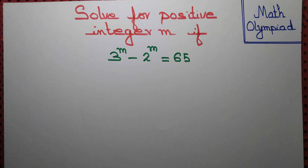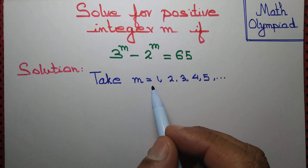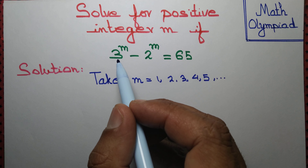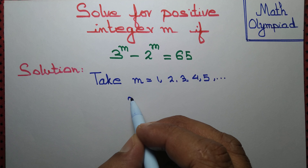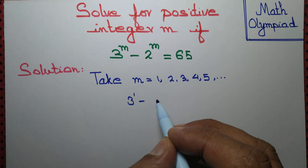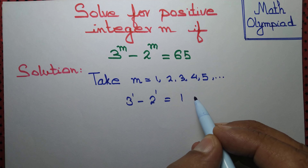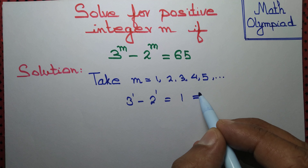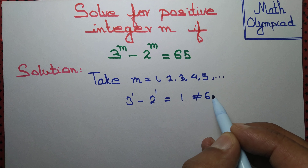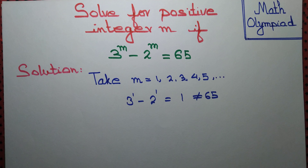We take m equal to 1, 2, 3, 4, 5. For m equal to 1, LHS equal to 3 to the power 1 minus 2 to the power 1, that's equal to 1, which is not equal to 65. So obviously m equal to 1 is not a solution.